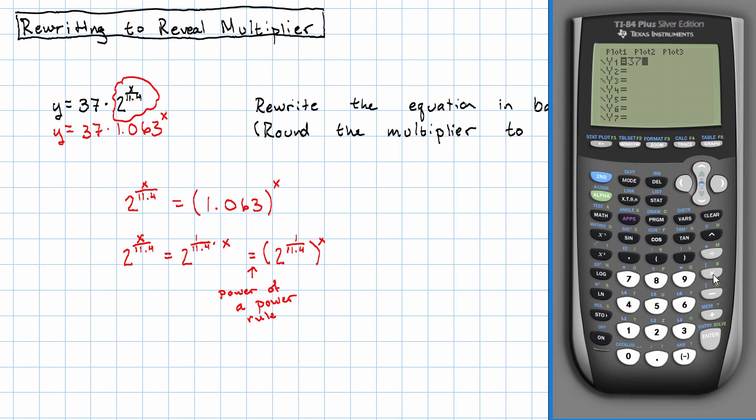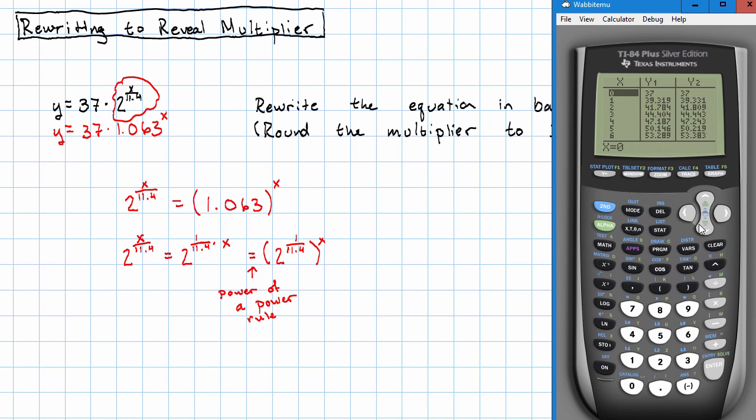So, we started with thirty-seven times two to the power x over eleven point four. And we ended up with the equation thirty-seven times one point zero six three to the x. And we're going to look at the table. Now, when x is real small, these are pretty much the same. But as x gets bigger, they start to get a little further apart. What's happening?